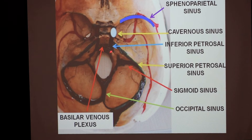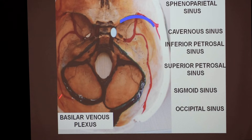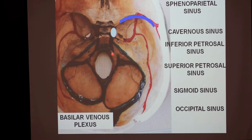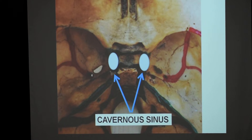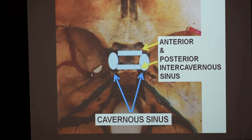Lastly, we have the basilar venous plexus. To summarize the locations: the inferior petrosal sinus is in the petro-occipital fissure, the cavernous sinus is on either side of the pituitary fossa, the sphenoparietal sinus is at the lesser wing, the sigmoid sinus is in the sigmoid sulcus, the transverse sinus is in the transverse sulcus, and the basilar venous plexus is on the surface of the clivus. The two cavernous sinuses on each side of the pituitary fossa are connected with each other anteriorly and posteriorly by the anterior and posterior intercavernous sinuses.